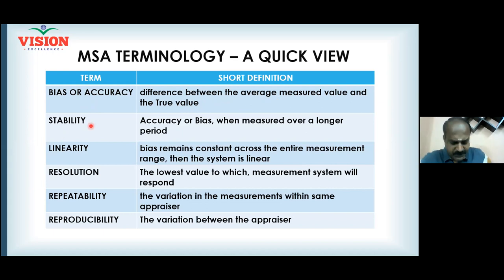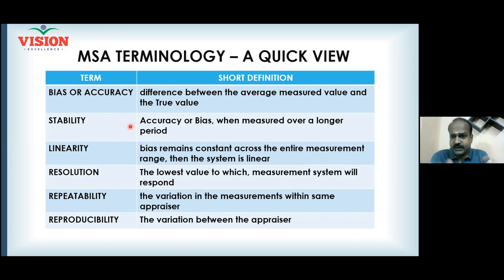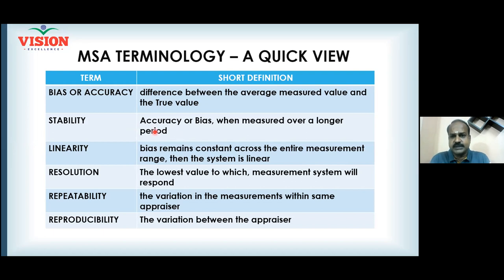Stability is how your bias behaves over a period of time. If I use a measuring gauge today, tomorrow, next week, and next month — for example over a six-month project — is the bias remaining the same throughout that entire duration? That consistency is called stability.